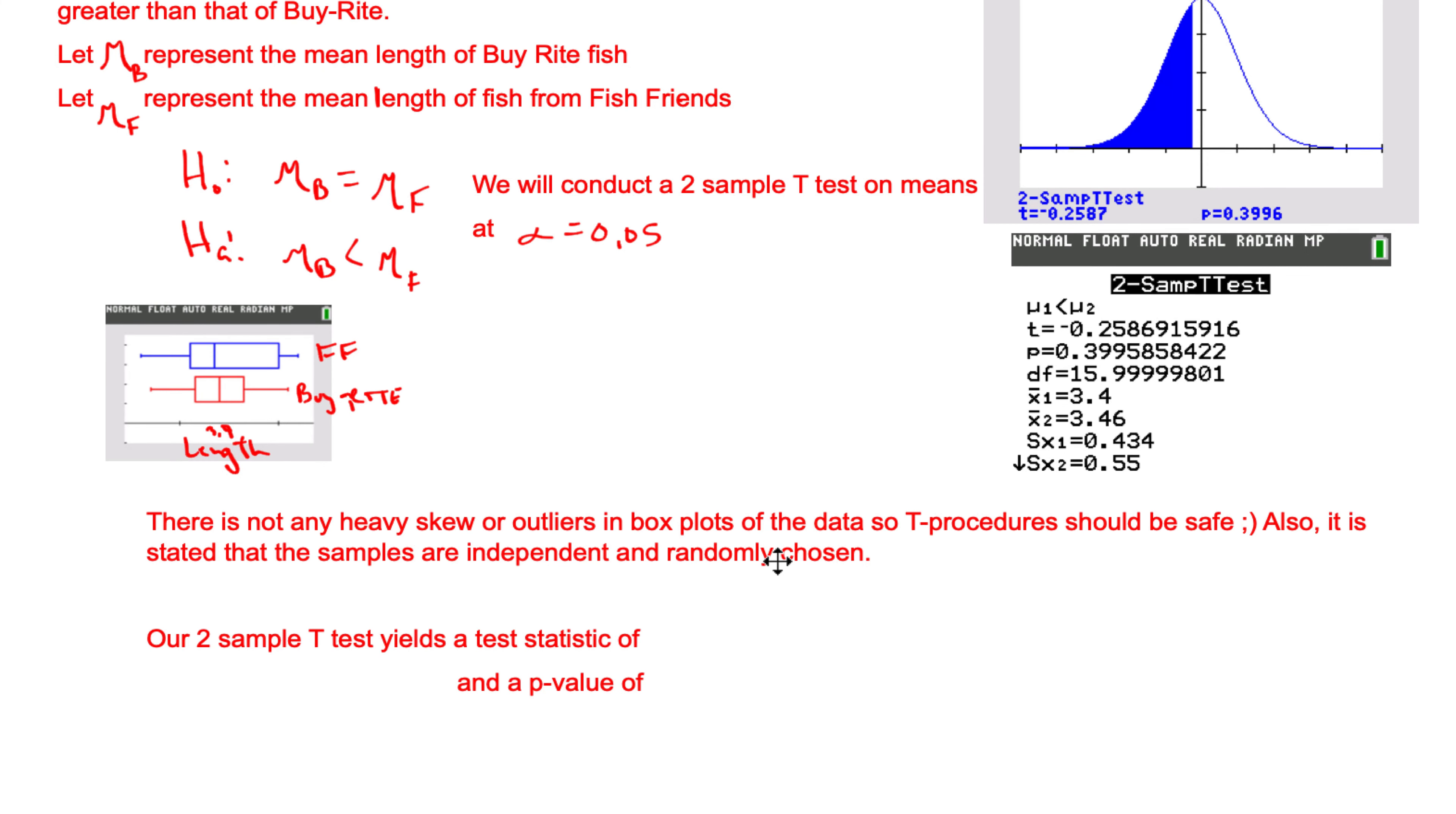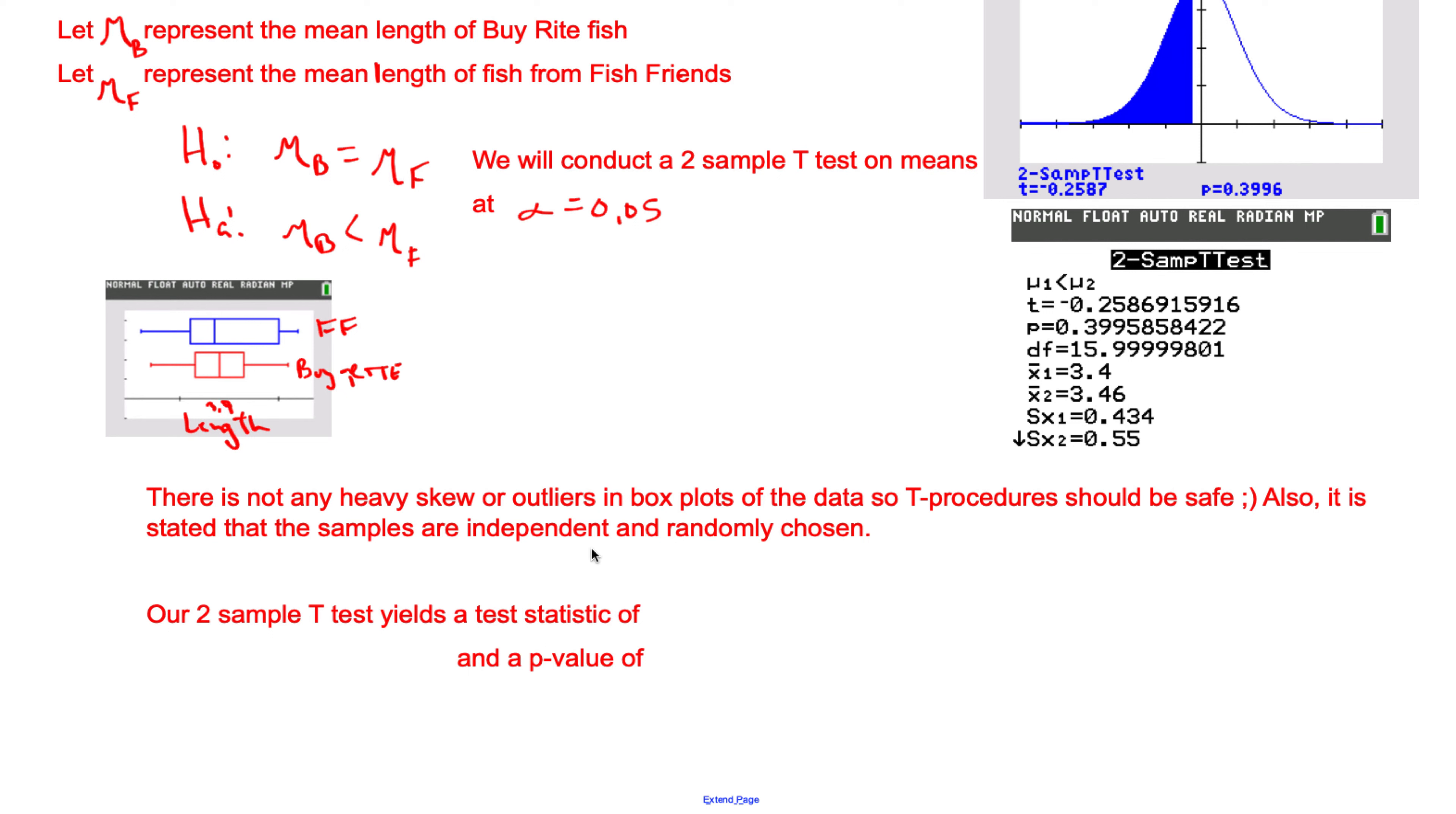Our two-sample t-test yields a test statistic of—if you're not into the formulas, which honestly I'm not, but look, it's right here—so t is going to equal negative 0.25869, and we have a p-value that is right here in our calculator. P-value equals 0.399585.